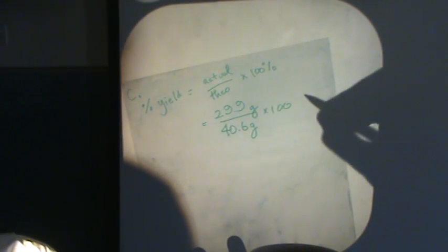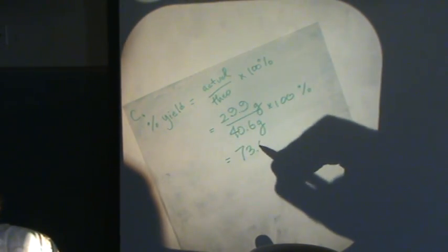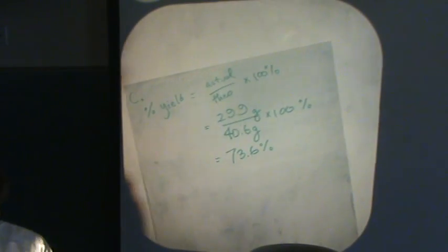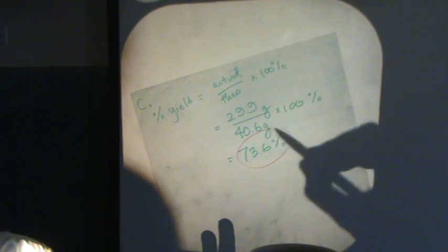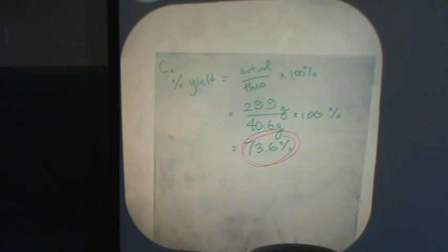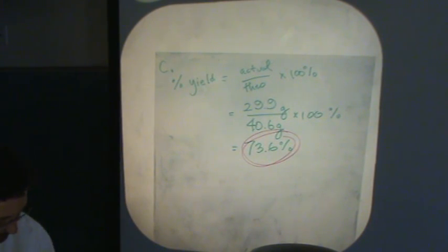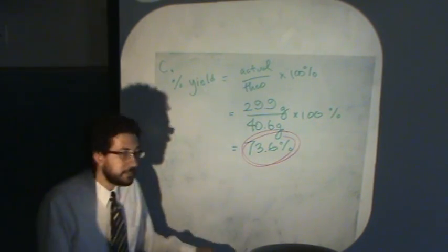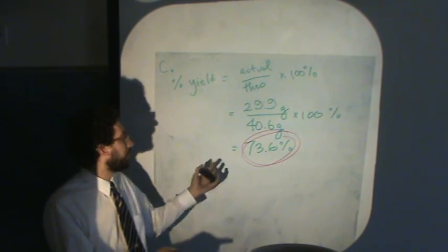So that's the yield in this reaction that actually occurred in lab. Again, we should have got 40.6, but for whatever reason, we got less. Okay, and there's our limiting reactant problem. We found, we began by finding how much was actually produced for the over-specified situation. Then we found out, okay, how much in excess reactant was left over, and finally, the percent yield.